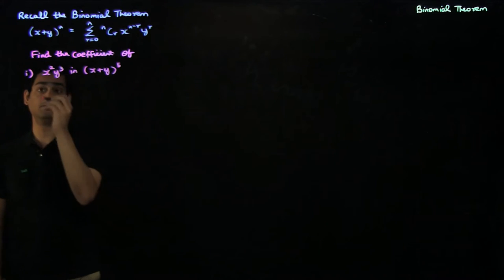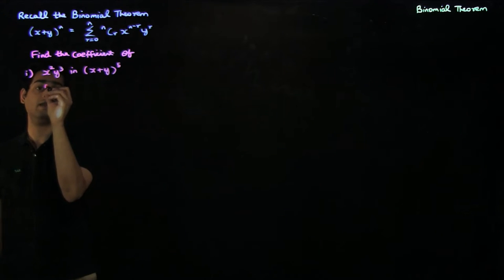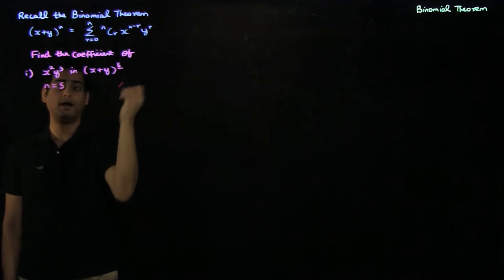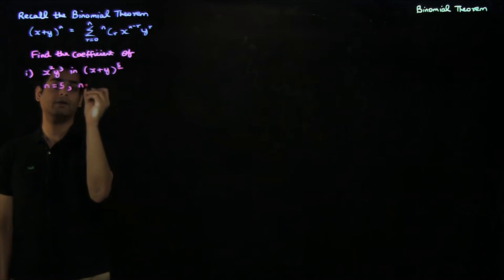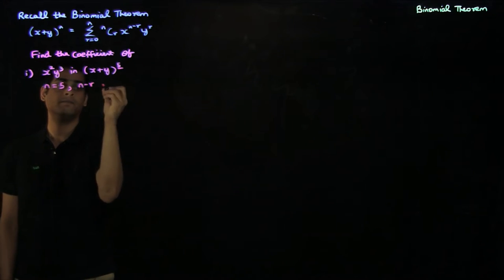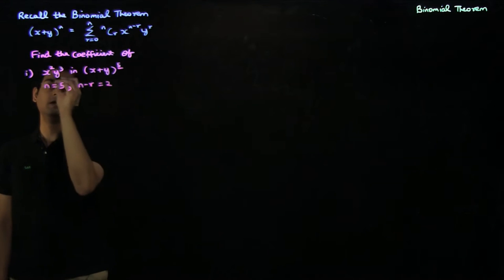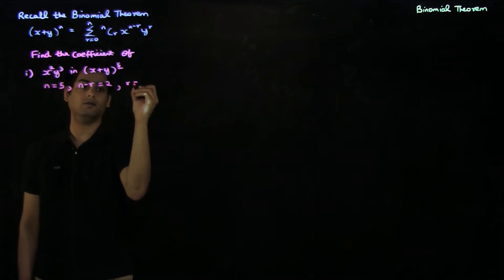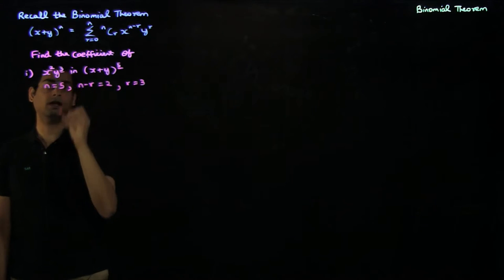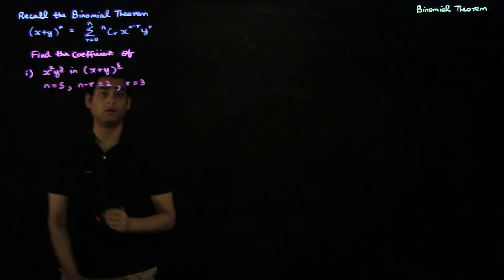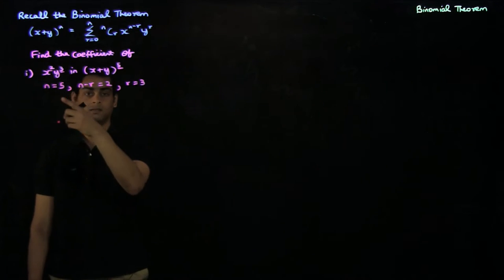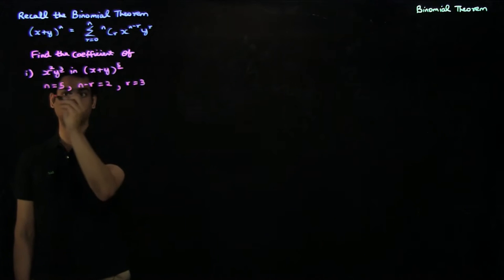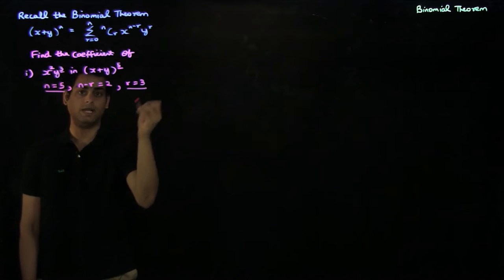In this case, we have n = 5, since we have (x + y)^5. We have n − r = 2, since we have x squared. And we have r = 3, since we have y cubed. You can see that this system of linear equations is consistent, with the solution n = 5 and r = 3.